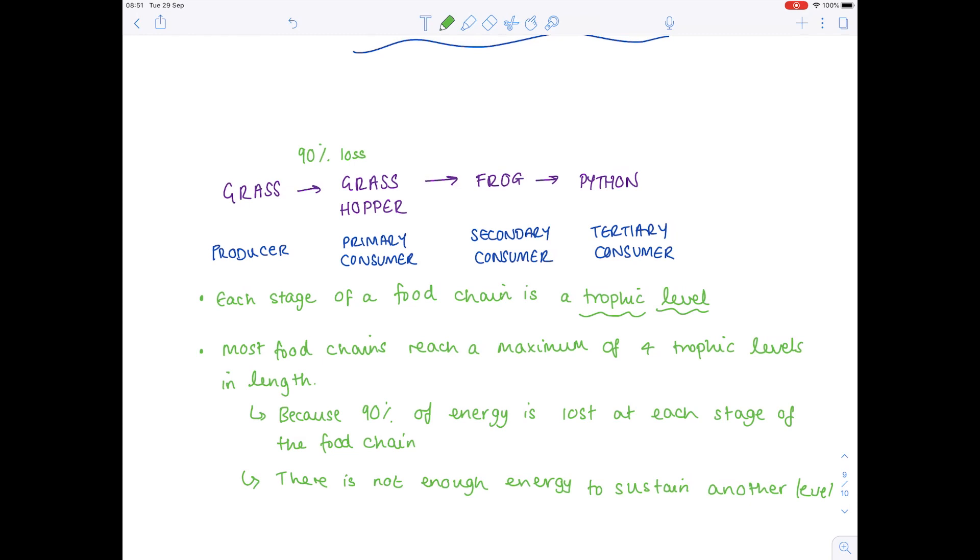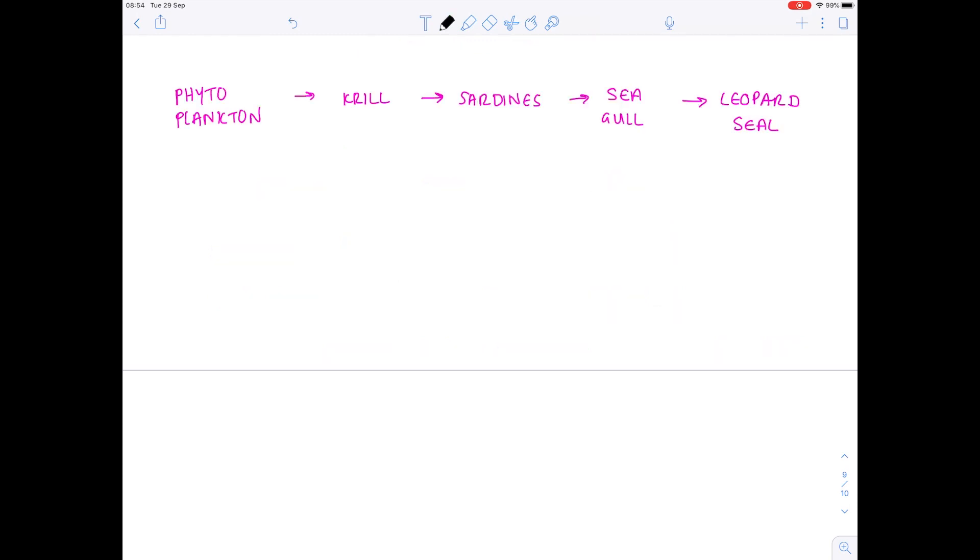Here's an example of an aquatic food chain, starting with our producer, the phytoplankton. That is eaten by krill, which is a shrimp-like organism and your primary consumer. Sardines feed on the krill, so they're your secondary consumer.